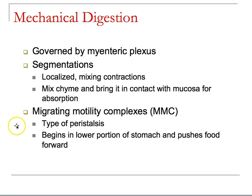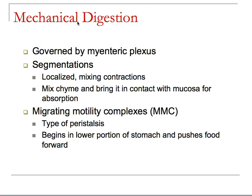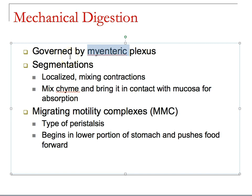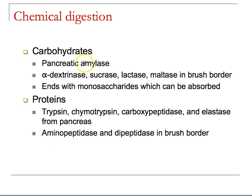Alpha-dextrinase, maltase, sucrase, and lactase break down carbohydrates. Aminopeptidases and dipeptidases handle amino acids. Nucleosidases handle RNA and DNA. Phosphatases break down phosphates. There's no true mechanical digestion in the small intestine, but materials must be segmented — that's the purpose of the myenteric plexus — to mix chyme with the mucosa for absorption and move it toward the large intestine.